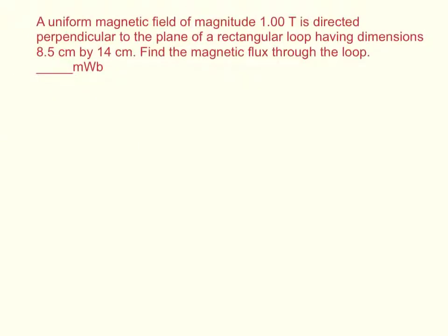A uniform magnetic field of magnitude 1 tesla is directed perpendicular to the plane of a rectangular loop having dimensions 8.5 cm by 14 cm. Find the magnetic flux through the loop.